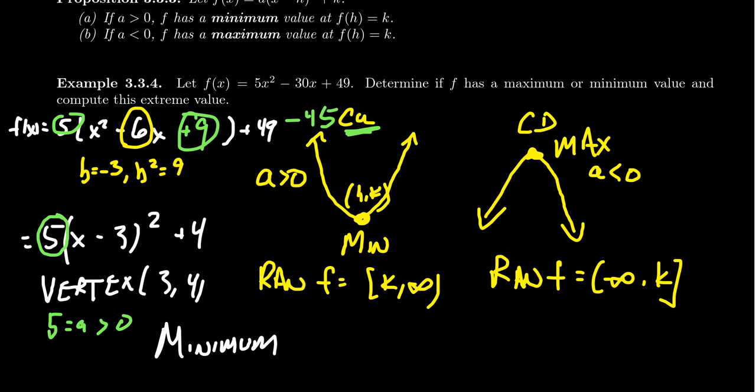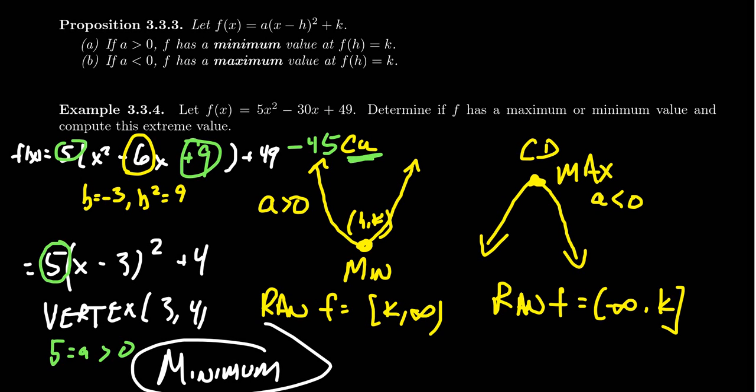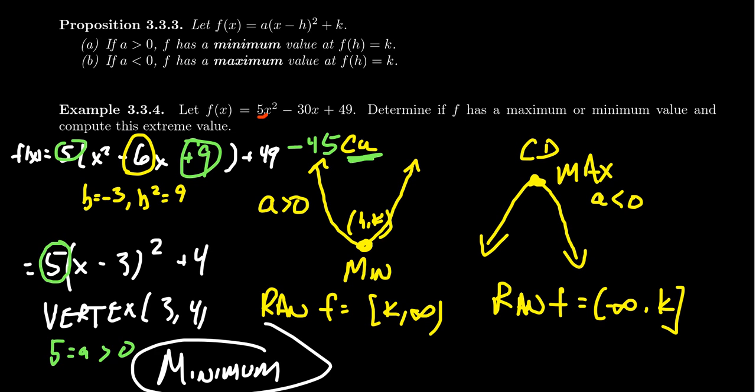Now, another thing I want to mention is that we actually knew we were going to have a minimum even before we computed the vertex because of this fact right here. Notice that the coefficient,